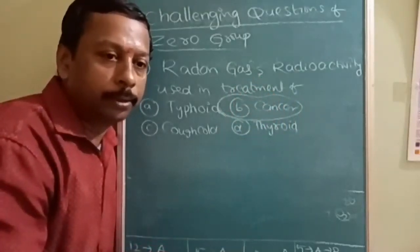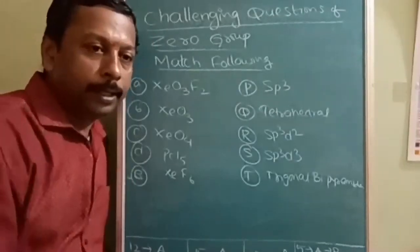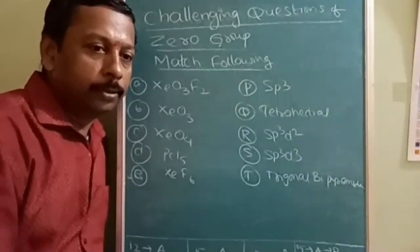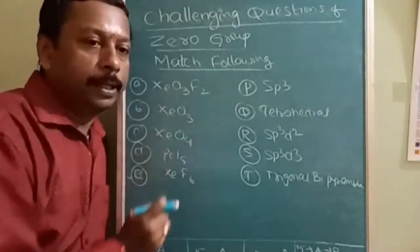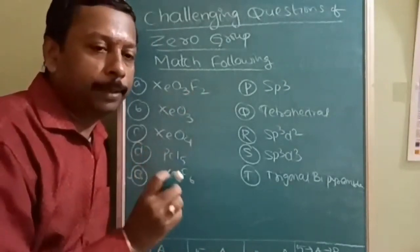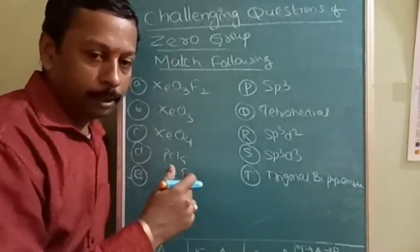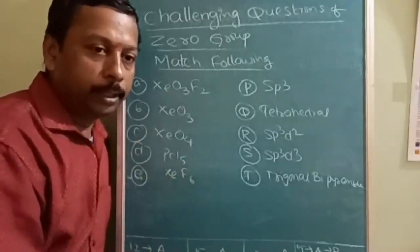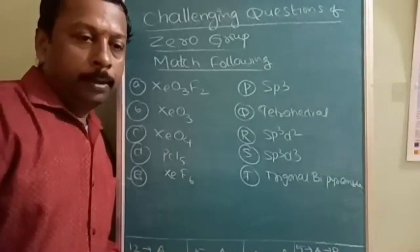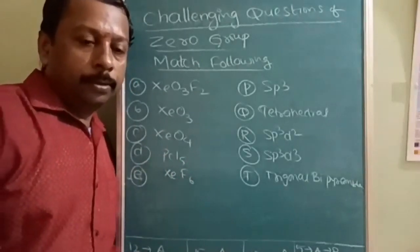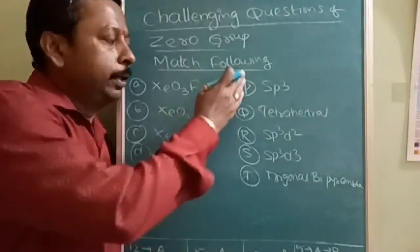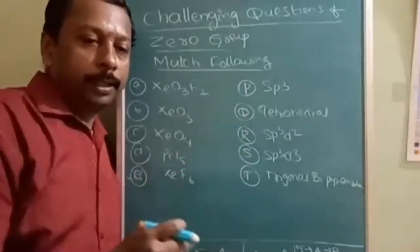So that is the answer B. Next is the match the following. So all answers can be sent together, you can keep it with you and I will try to explain, then you can match with your answer. It is a matrix match, so one answer can be all, one answer can be one also.